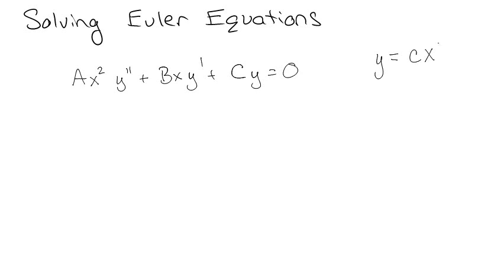It's just y equals cx to the r. Let's take a derivative. y prime equals rcx to the r minus 1, and then y double prime equals r times r minus 1 times cx to the r minus 2. Isn't that lovely?